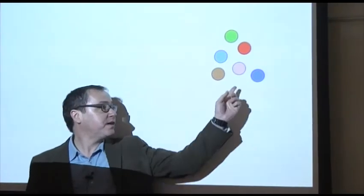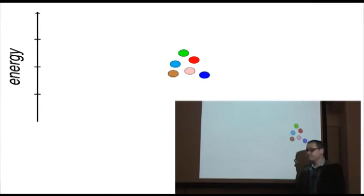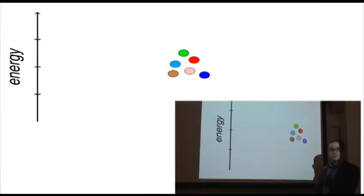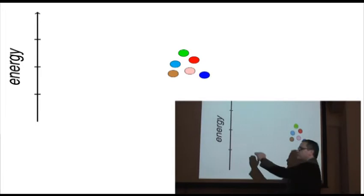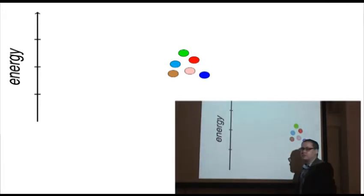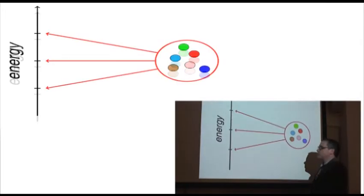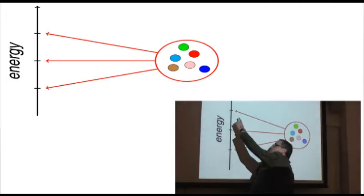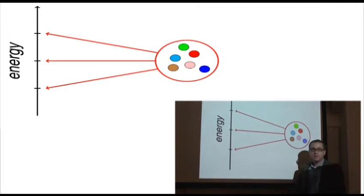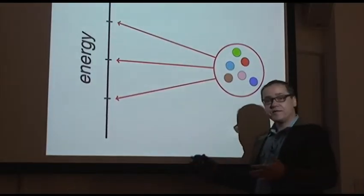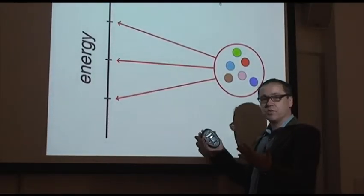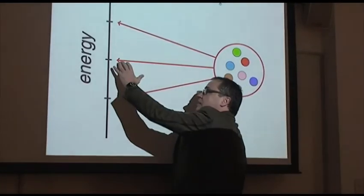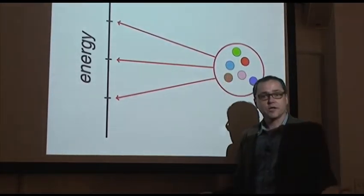So this is step number one. Think about this: you have six molecules and you want to spread those molecules over a bunch of energy levels. Perhaps you want to have these molecules with low energy, with intermediate energy, or with high energy. The question is, how many different ways of spreading these molecules over these energy levels are there?